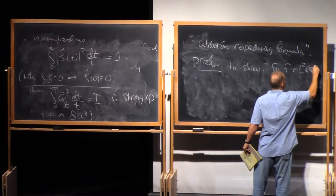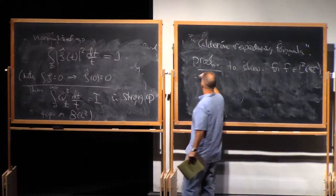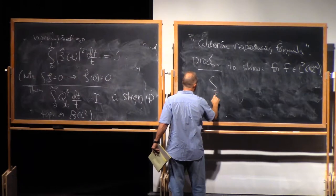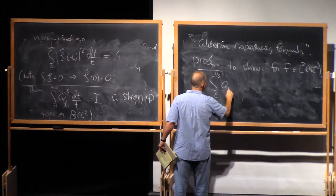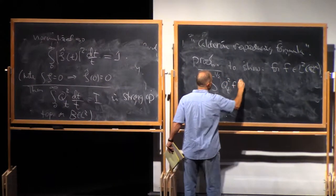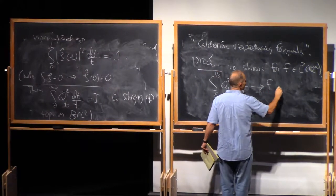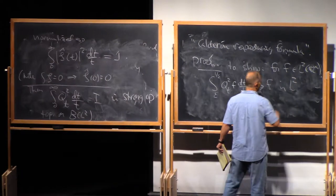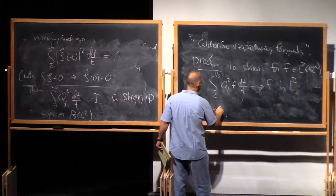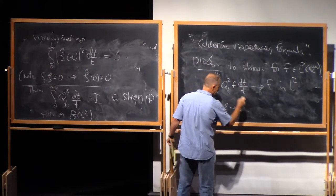That integral from, let's say, epsilon to one over epsilon of Q_t squared f dt over t converges to f in L2, as epsilon goes to zero.